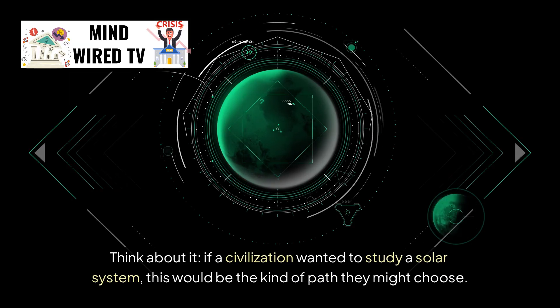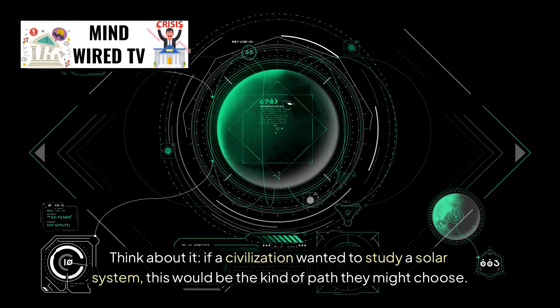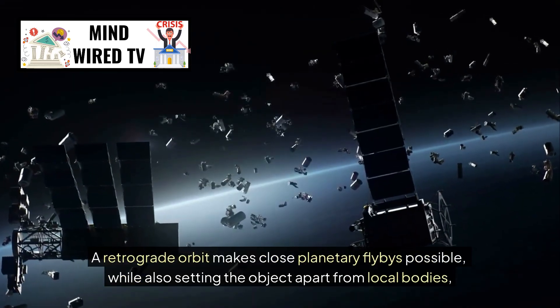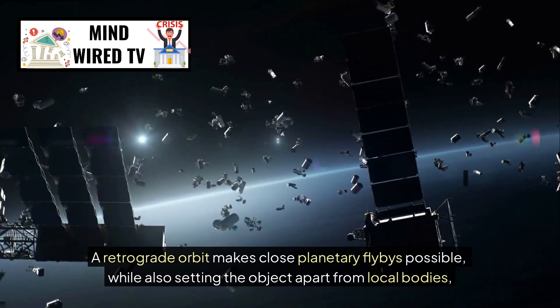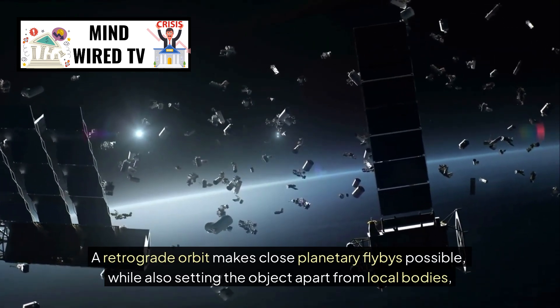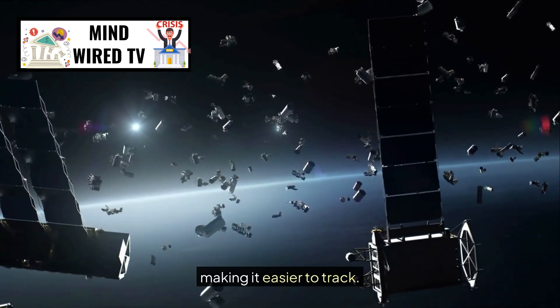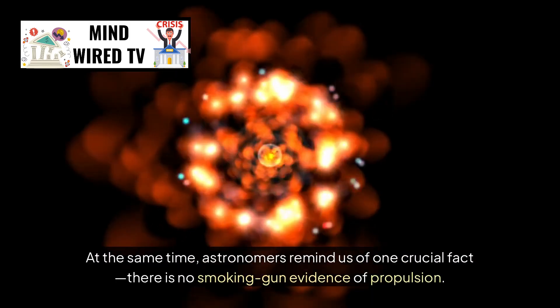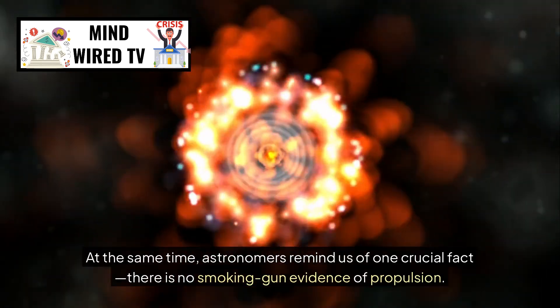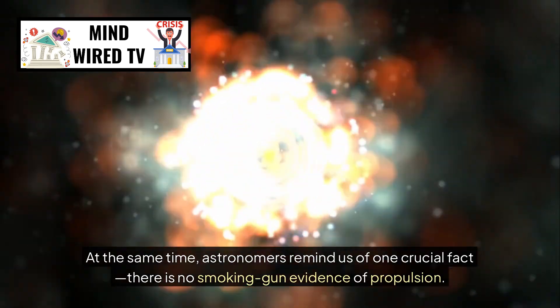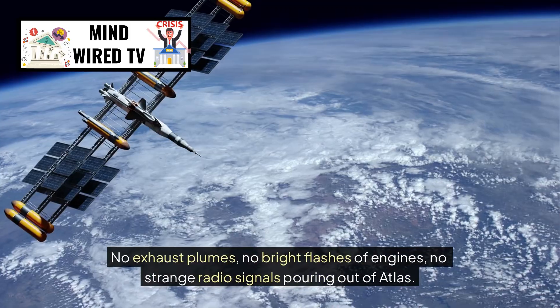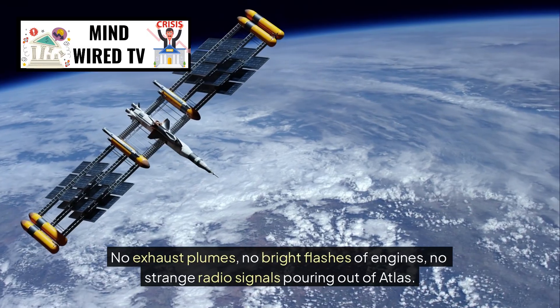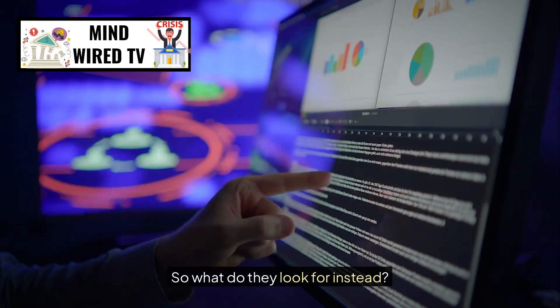Think about it. If a civilization wanted to study a solar system, this would be the kind of path they might choose. A retrograde orbit makes close planetary flybys possible, while also setting the object apart from local bodies, making it easier to track. It's the kind of trajectory that feels strategic rather than random. At the same time, astronomers remind us of one crucial fact. There is no smoking gun evidence of propulsion, no exhaust plumes, no bright flashes of engines, no strange radio signals pouring out of Atlas.